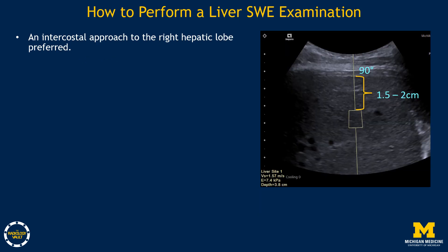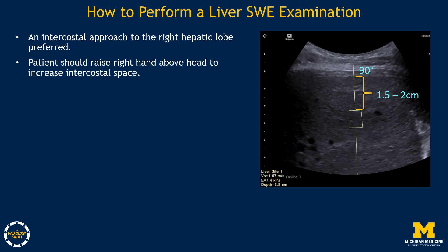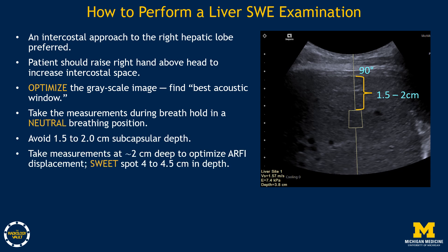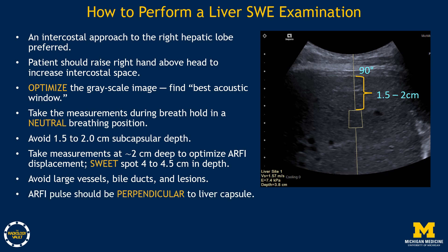To perform a liver shear wave elastography exam, an intercostal approach to the right hepatic lobe is preferred. The patient should raise the right hand above the head to increase intercostal space. The sonographer needs to optimize the grayscale image to find the best acoustic window and take measurements during breath hold in a neutral breathing position. Avoid the 1.5 to 2 centimeter subcapsular depth. Measurements are taken at about 2 centimeters deep to optimize ARFI displacement, with a sweet spot at 4 to 4.5 centimeters in depth. Avoid large vessels, bile ducts, and lesions. The ARFI pulse should be perpendicular to the liver capsule.